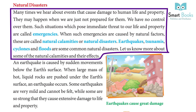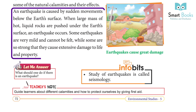Earthquakes, tsunamis, cyclones and floods are some common natural disasters. Let us know more about some of the natural calamities and their effects. An earthquake is caused by sudden movements below the earth's surface. When large masses of hot, liquid rocks are pushed under the earth's surface, an earthquake occurs. Some earthquakes are very mild and cannot be felt, while some are so strong that they cause extensive damage to life and property.